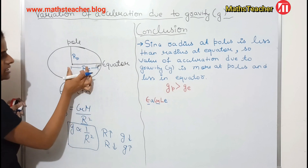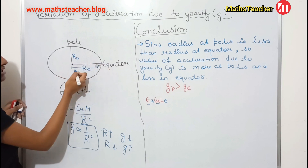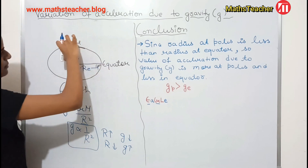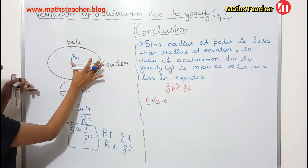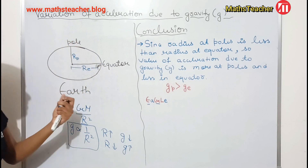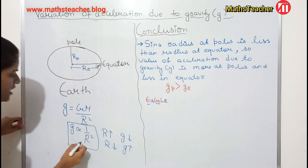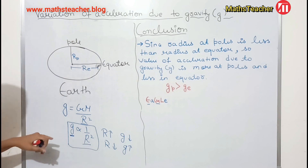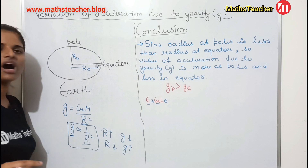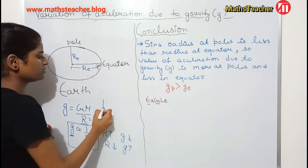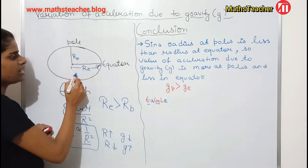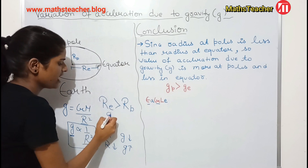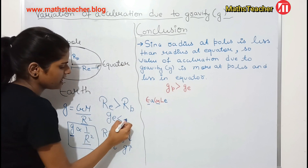This is the radius of the equator. The black line drawn is the center. Because the earth has an oval shape, the radius at the equator is greater than the radius at the pole — the equatorial radius is bigger and the polar radius is smaller. Since acceleration due to gravity is inversely proportional to r square, and the radius at the equator is greater than the radius at the pole, the gravity at equator is less than the gravity at poles.